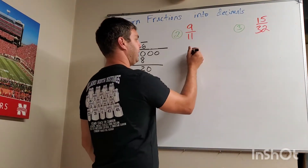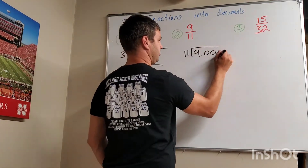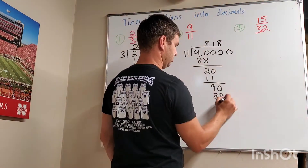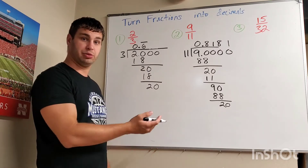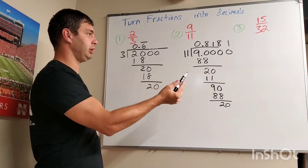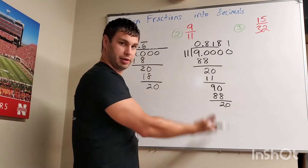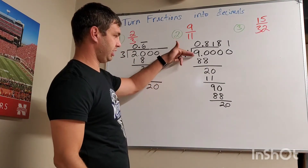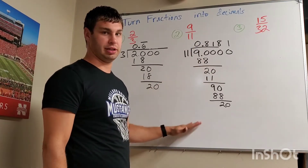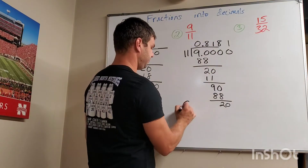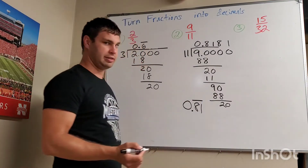Same idea here — we're going to take 9 divided by 11, so again do our long division. Clearly this one is also going to repeat, but this time with two digits: the 8 and the 1. So 0.818181... you can see that pattern is just going to continue. No matter what I do in that long division, 90 minus 88 is 2, bring down to 0, 20 minus 11 is 9, and it just keeps going. So the way I'd write that answer is 0.81̄ with a bar over the 8 and 1.